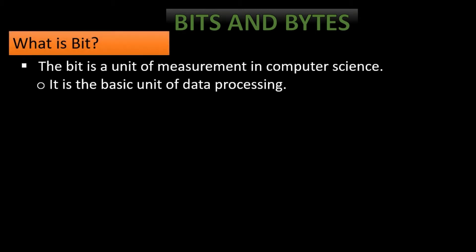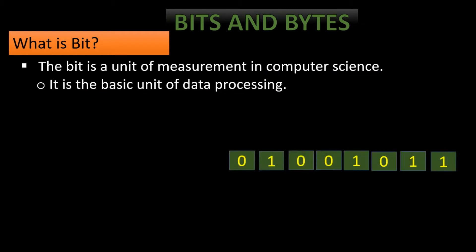First we will know: what is a bit? The bit is a unit of measurement in computer science. It is the basic unit of data processing. The symbol 0 or 1 is referred to as a bit. So 1 bit means 1 electronic pulse.